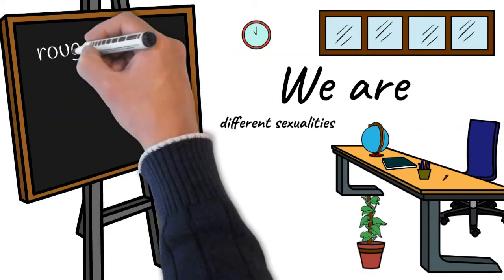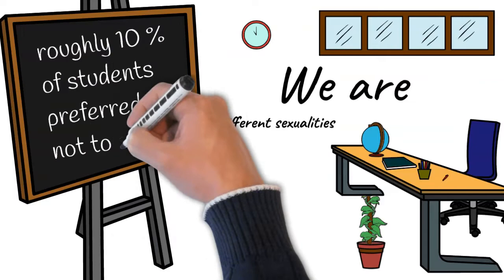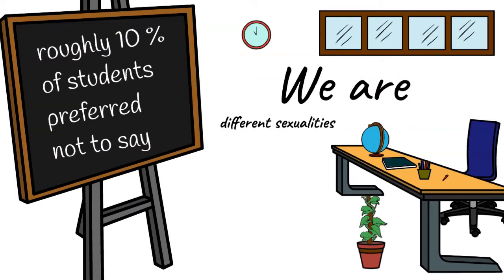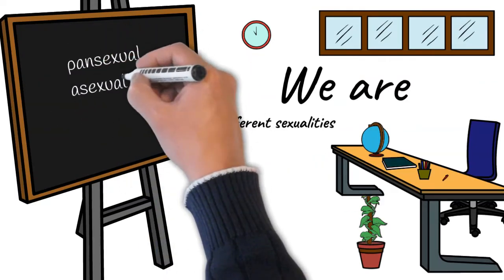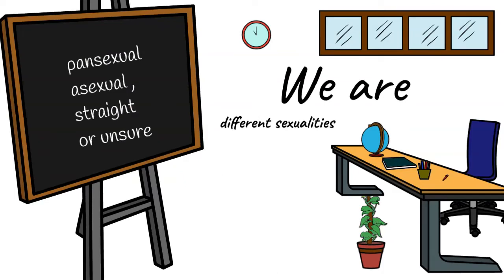About 10% of young people say that they preferred not to say their sexuality. The remaining 10% answered with asexual, straight or other variants of sexualities.